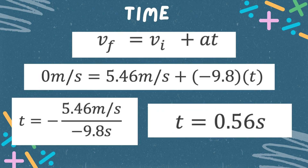Now let us find the time needed for the ball to reach the basketball ring after it was released by the player. Using the formula: final velocity is equal to the initial velocity plus acceleration times the time. Now let us substitute the given. After substituting, we can now solve for the time it takes the ball to reach the basketball ring. After solving, we finally get the time: 0.56 seconds.